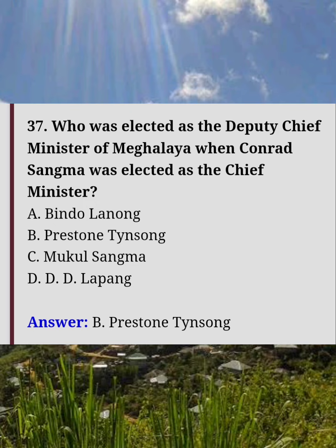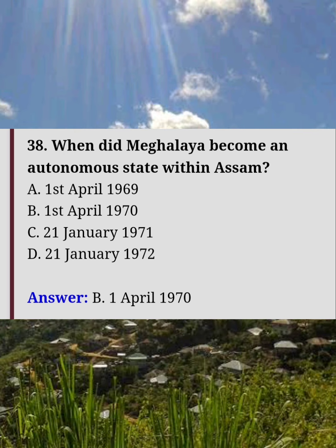Who was elected as the deputy chief minister of Meghalaya when Conrad Sangma was elected as chief minister? Answer B: Prestone Tynsong. When did Meghalaya become an autonomous state within Assam? Answer B: 1st April 1970.